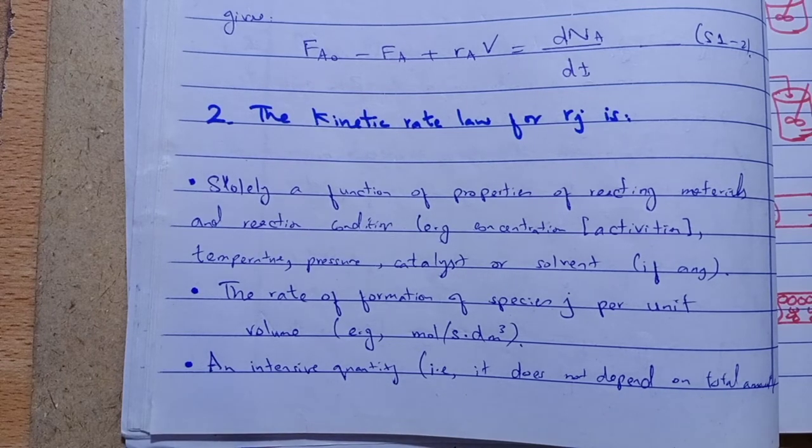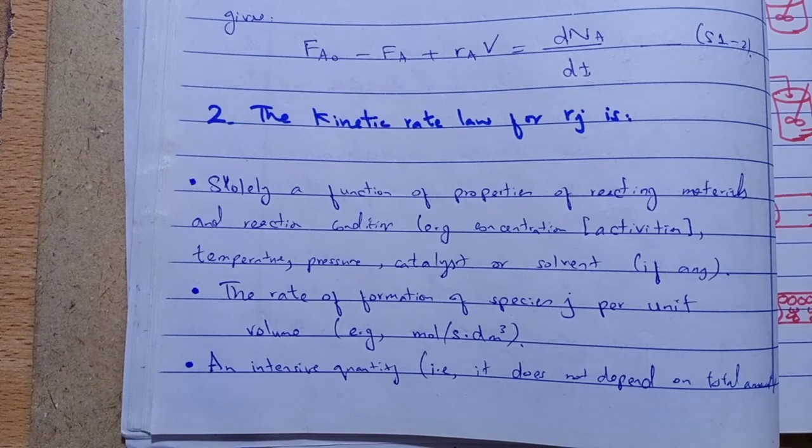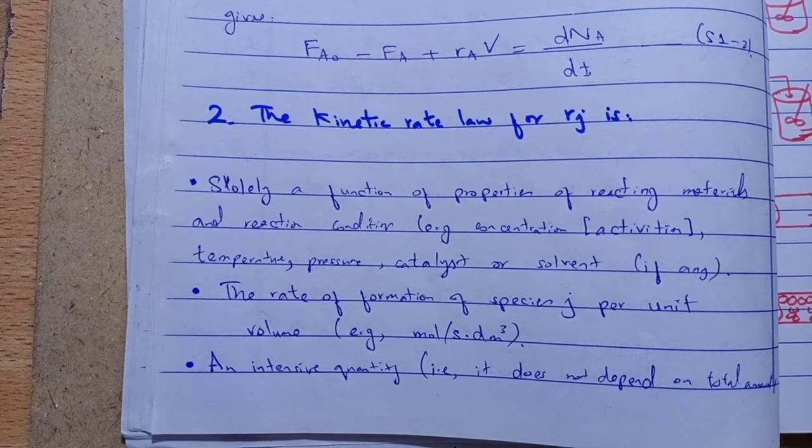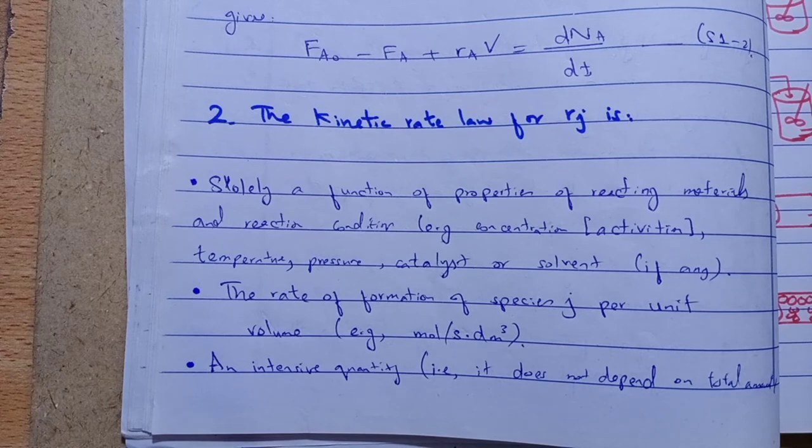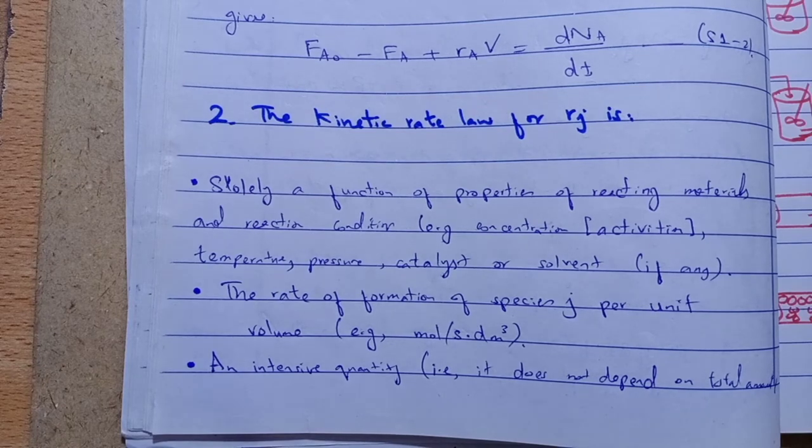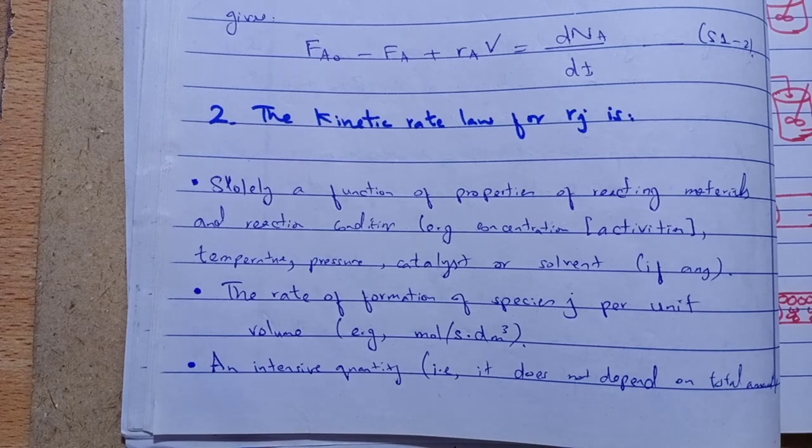So rate of formation of species j per unit volume, mean to say mole per second per decimeter cubed. But in the PBR, basically moles per gram catalyst per second.